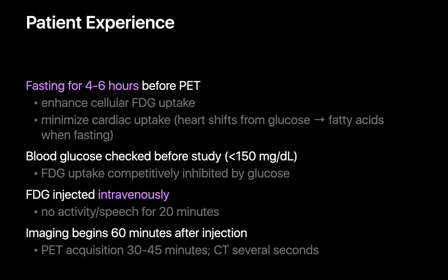A blood glucose level will usually be checked before the patient's PET scan, and if the patient isn't hyperglycemic, FDG is injected into the patient intravenously. The patient is asked to remain still until PET imaging begins an hour later. The actual PET acquisition lasts between 30 and 45 minutes. If the patient is having a PET-CT instead of just a PET alone, a CT acquisition is also done, which takes only a few additional seconds to acquire.